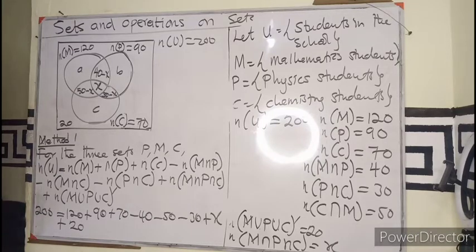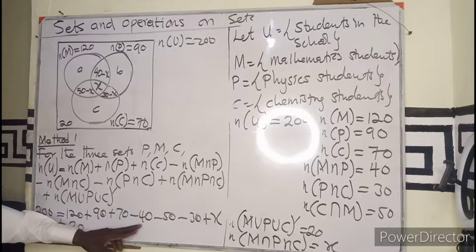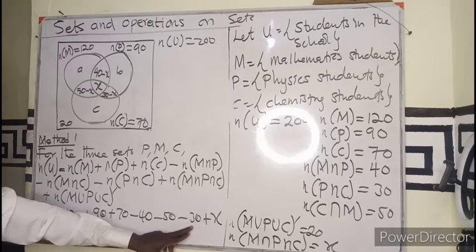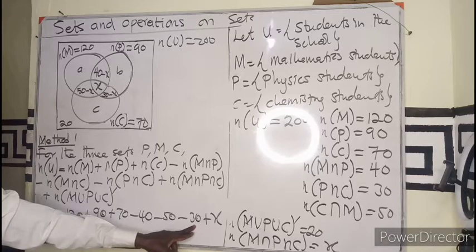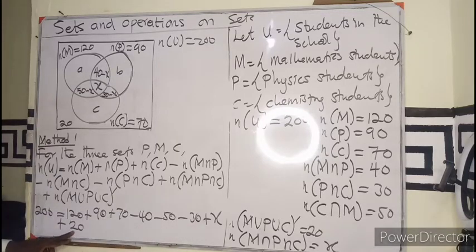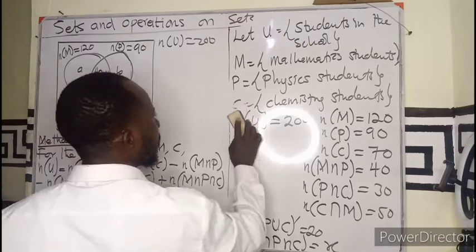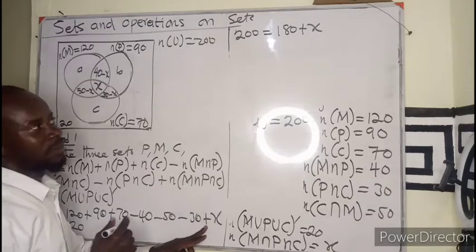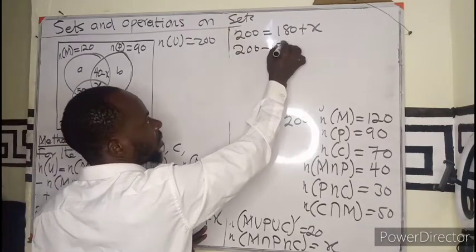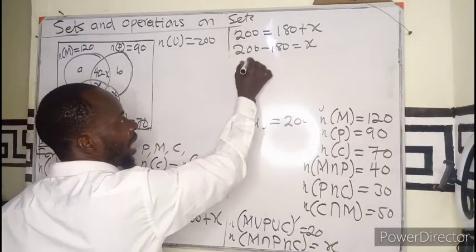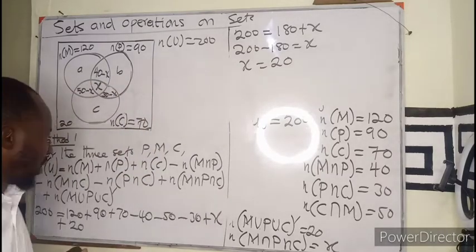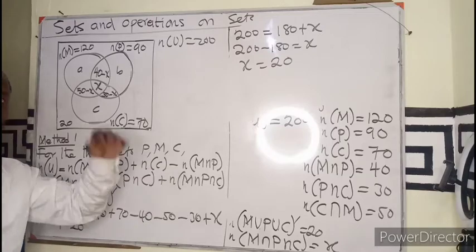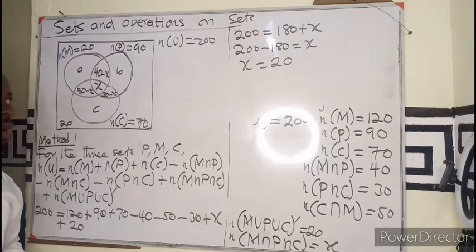Computing: 120 plus 90 plus 70 gives 280. Subtracting 40 gives 240, minus 50 gives 190, minus 30 gives 160, plus 20 gives 180. So 200 equals 180 plus X, which means X equals 20. By the formula, the number of students who study all three subjects is 20.